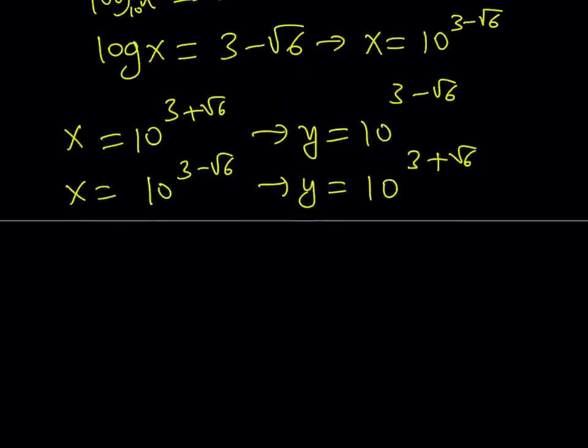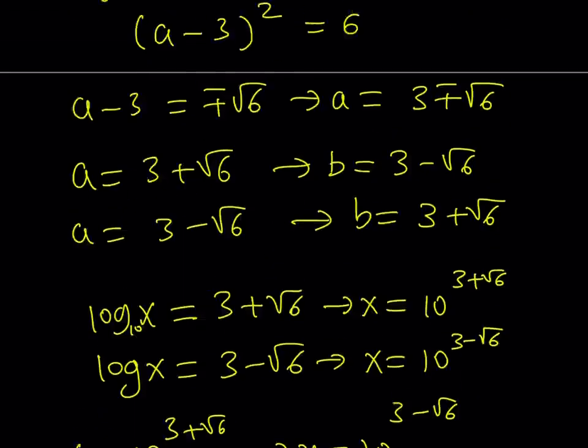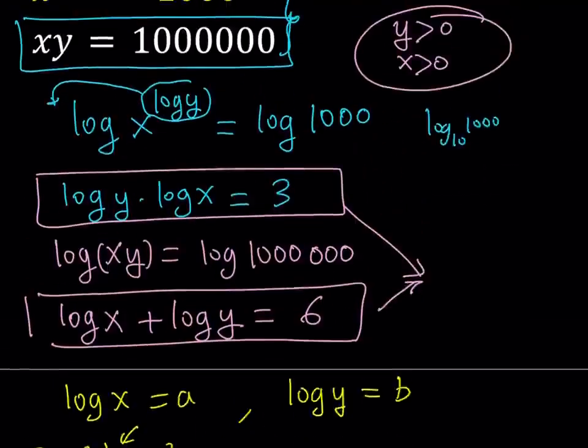But here's the thing. If you look at the original problem, first of all, multiply x and y. In both cases, you're going to be getting the same product. So, xy is going to be 10 to the power 6, which will be verified. But what about the second equation? I mean the first one, right? Is that the first one? I think so.